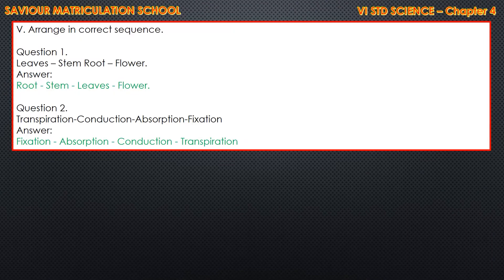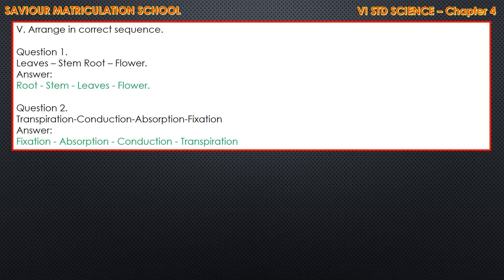Then, number 5 — arrange in correct sequence. First question: leaves, stem, root, flower. You have to arrange it in the correct order. The correct order is: root, stem, leaves and flower. Question 2: transpiration, conduction, absorption, fixation. The correct answer is: fixation, absorption, conduction and transpiration.